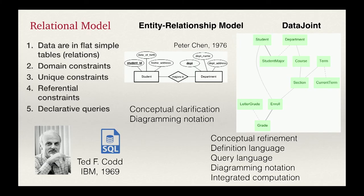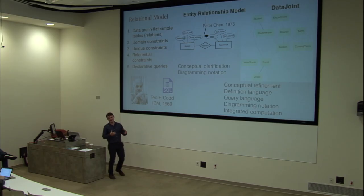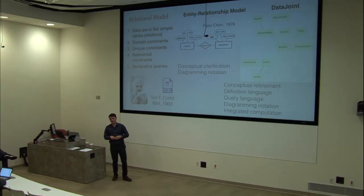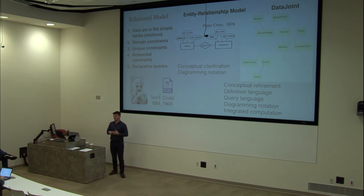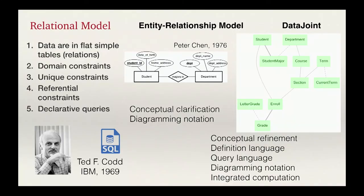In 1976, there was a big breakthrough in refining how to translate real-world problems into relational designs: the Entity Relationship Model. It was a conceptual clarification with helpful diagramming notation, though it didn't translate into its own programming language. DataJoint is a further conceptual refinement, very much inspired by the Entity Relationship Model, but it's a full implementation. In a database course you'd learn the Entity Relationship Model and then translate it into SQL. With DataJoint, you don't have to do that — one model is both conceptually clarifying and directly usable for defining and querying data.